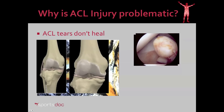Here's what results — this is an ACL tear. You can see how the body has atrophied the ACL and walled it off. There's really no potential for this stub to heal to either bone or to the other end of the ACL.